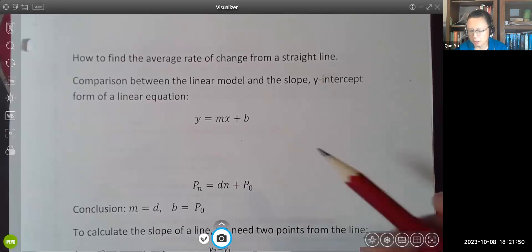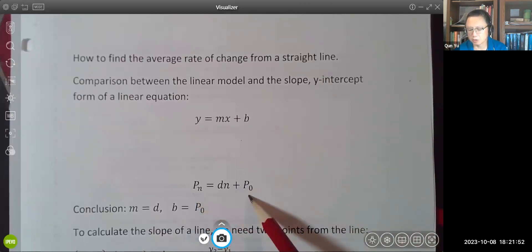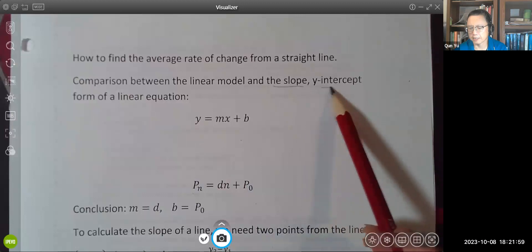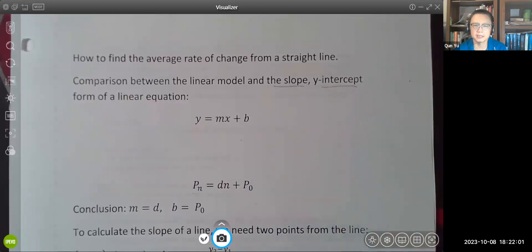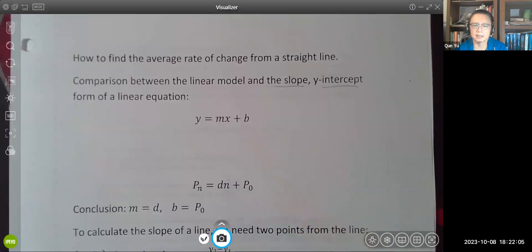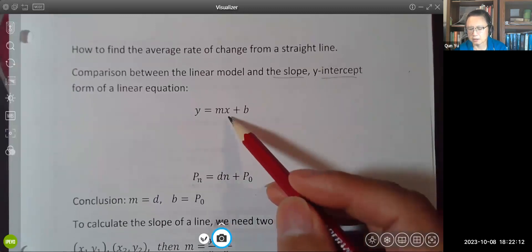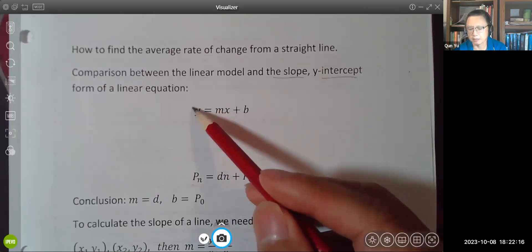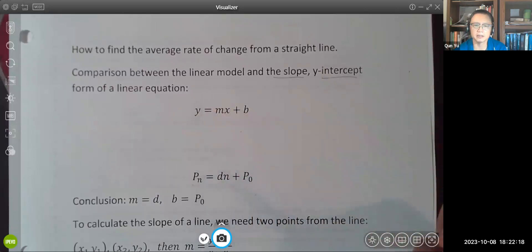First of all, this is our linear model and everybody learned in pre-algebra the so-called slope y-intercept form of linear equation. Basically, these two have exactly the same structure, so let's do a quick comparison first. In this slope y-intercept form we have y on one side by itself, so this is the output variable.